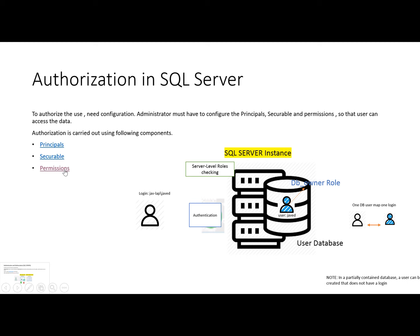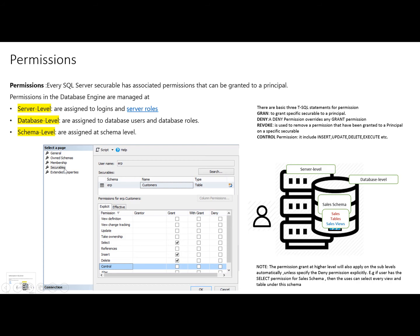What are the permissions? How to use these permissions to implement authorization in SQL Server? Every SQL Server securable has associated permissions that we can grant to our principals, and we can categorize the principals into three levels: one is the server level, one is the database level, and the third one is at the schema level. Server level permissions are assigned to the server principals, and the server principals are the logins and the server level roles.